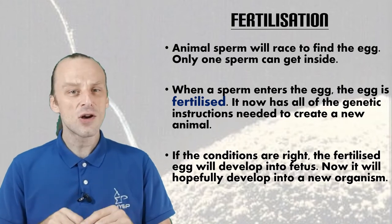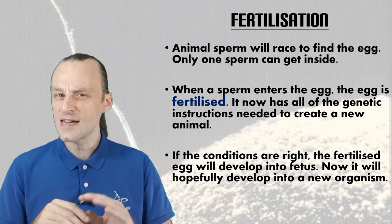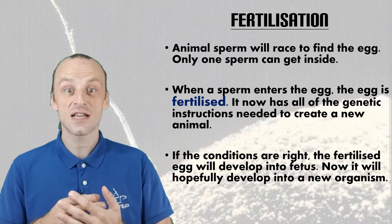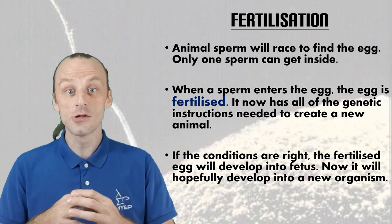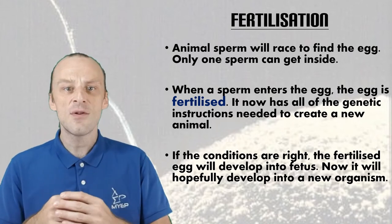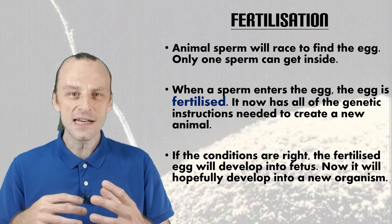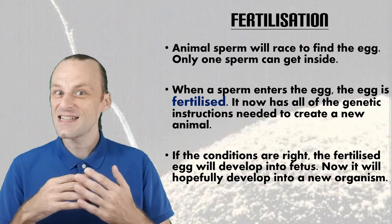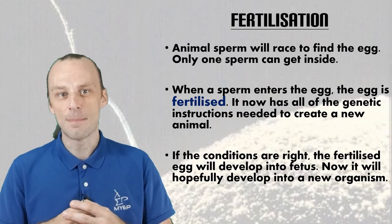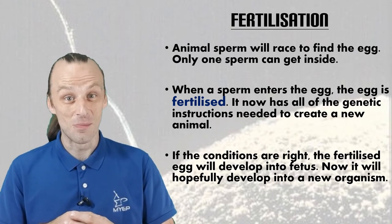I say hopefully because the early stages of fertilization and development are very delicate, and if there is even just one tiny problem, this can lead to the whole process failing. This is why human couples with a new baby are usually told to wait until three months before they tell their friends they are expecting, because in the early stages the breakdown of the fetus is quite common, and it is extremely sad if you have to tell your friends that you have lost a new baby because the process has broken down. Unfortunately, biology is really complicated.